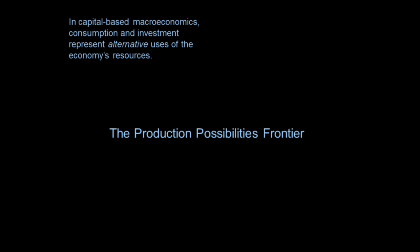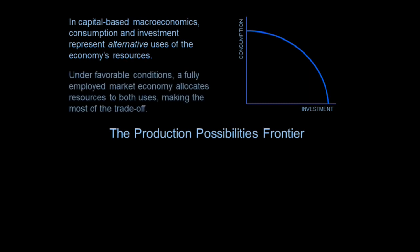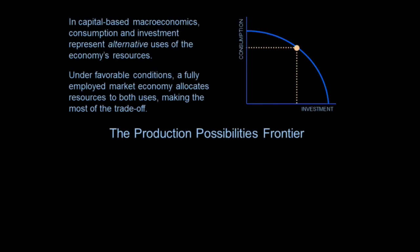I start with the familiar production possibilities frontier, found on somewhere between pages 5 and 10 of every macroeconomics or economics textbook — used predominantly in micro rather than macro. I put consumption on the vertical axis and investment on the horizontal axis. Under favorable conditions, a fully employed economy allocates resources to both uses, making the most of the tradeoff. By favorable conditions I mean the market is allowed to work: wage rates change to clear the labor market, interest rates change to clear the market for loans, prices change to clear supply and demand for goods and services. If that's so, the economy will find itself somewhere on that production possibility frontier.